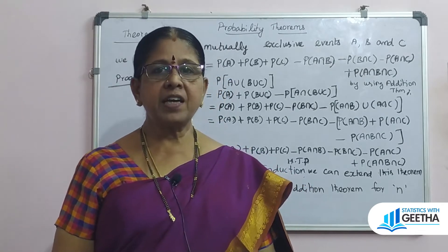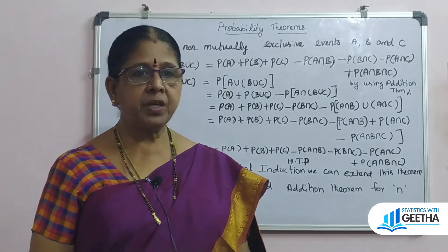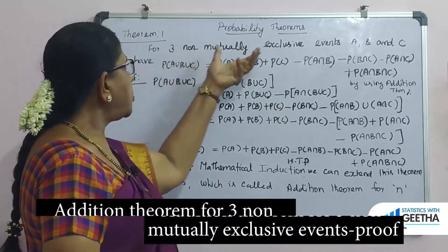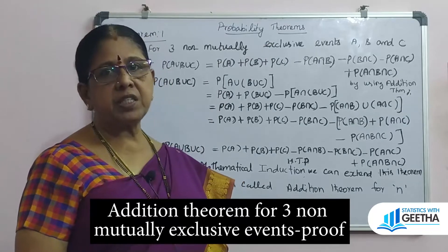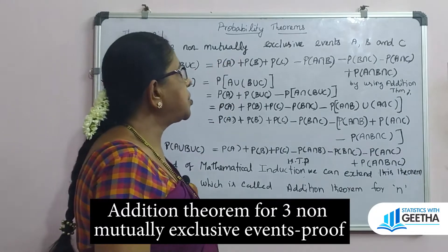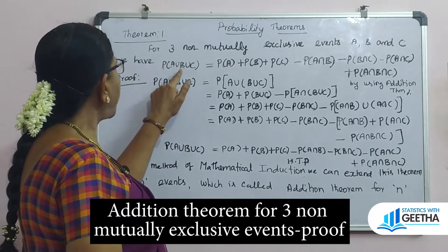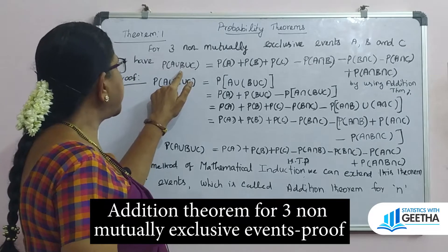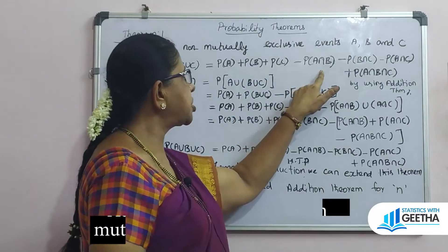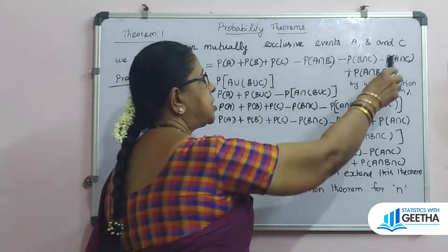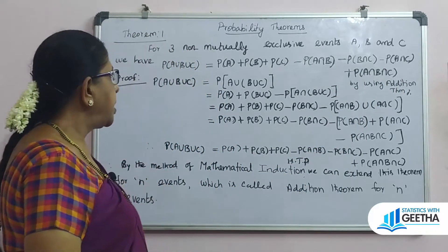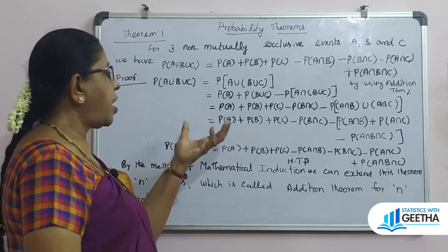Hello, welcome to my channel 'Statistics with Geetha.' Now we are going to see the addition theorem for three non-mutually exclusive events A, B, and C. The statement: for three non-mutually exclusive events A, B, and C, we have probability of A union B union C equal to P(A) plus P(B) plus P(C) minus P(A intersection B) minus P(B intersection C) minus P(A intersection C) plus P(A intersection B intersection C).